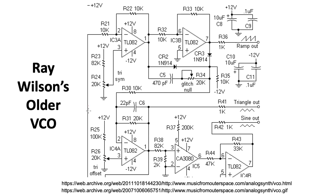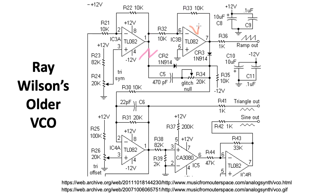Here we see that we have a sawtooth wave coming in, and we wind up creating two versions of it. There's the original version of the sawtooth wave, and then we go through this inverting op-amp with the two resistances being the same, so we wind up with an inverted version of that waveform, and then those are shoved into a couple of diodes.